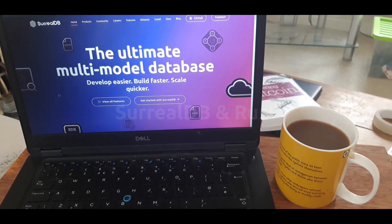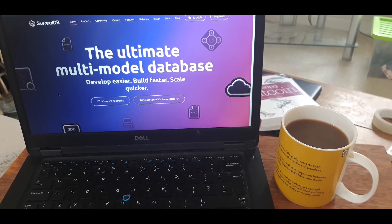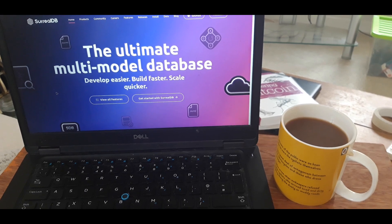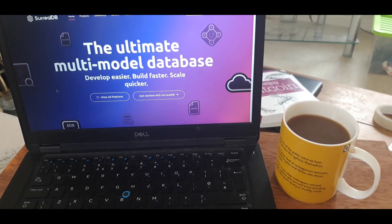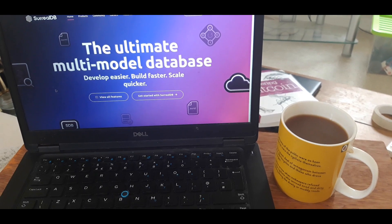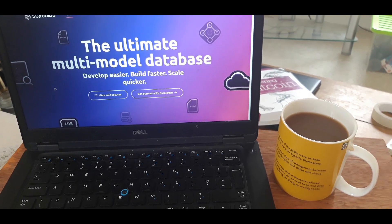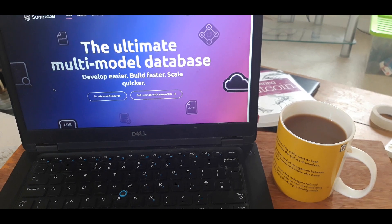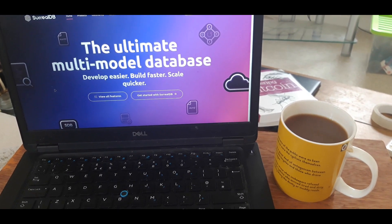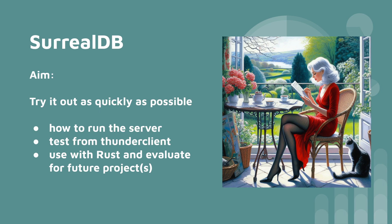Hello, let's take a look at SurrealDB. It's written in Rust and I've used some of their examples and added some using Thunder Client, and also done some examples using Surrealist, which is a browser-based playground where you can experiment. We'll look at how to run the server, then we will test from Thunder Client, which is a VS Code extension, a bit like Postman. And then we will look at some Rust example code and evaluate whether we will be using it for a future project with Rust.